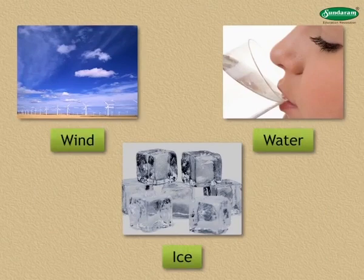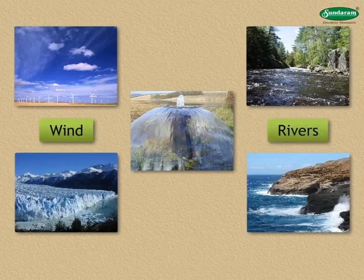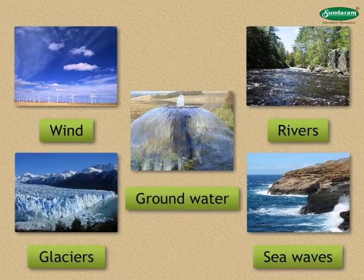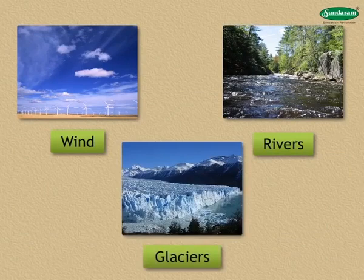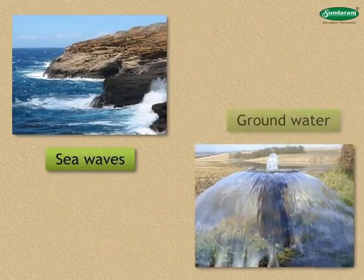Therefore, wind, rivers, glaciers, sea waves and groundwater are called agents of erosion. The work of wind, river and glacier is controlled by the climate of the region. Sea waves and groundwater work in the region wherever they exist.